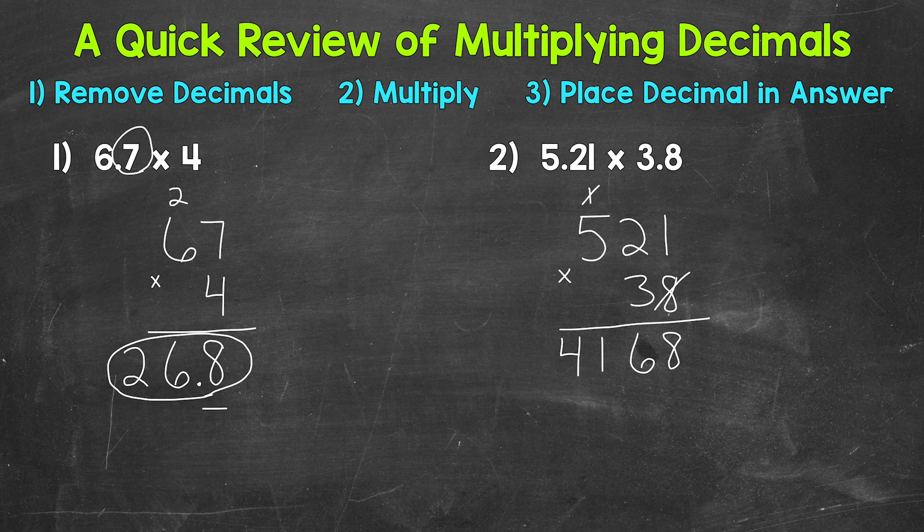So we're going to move over to the 3. We're moving one place value to the left, so we need our placeholder 0 here and now we multiply starting with 3 times 1 which is 3. 3 times 2 is 6 and then 3 times 5 is 15.